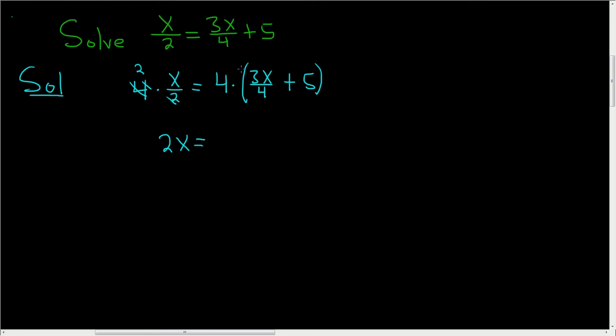And on the right-hand side, we just have to distribute. So 4 times 3x over 4, the 4s will cancel and we're left with 3x. And then 4 times 5, that's going to give us 20.